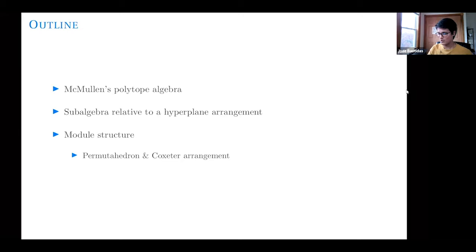This is the outline for now. I will introduce what my combinatorial sport of algebra is. We're going to restrict ourselves to something that is relative to a hyperplane arrangement, and we'll see that that thing has a modular structure over this monoid that we introduced in the previous talk. And we'll say something in the case of the permutohedron and the type B permutohedron.